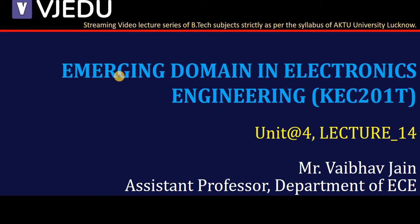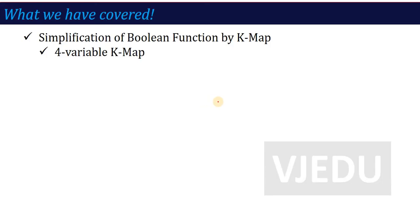Hello everyone, I welcome you all to the video lecture series of Emerging Domain in Electronics Engineering. The subject code is KEC201T and here we are in lecture number 14 of unit number 4. In the previous lecture, we covered the simplification of boolean functions by the K-map, and we considered the 4-variable K-map. We have seen 2 variables, 3 variables, and 4 variables. The 4-variable K-map is the most important one, because if we don't understand this, we don't understand K-map.